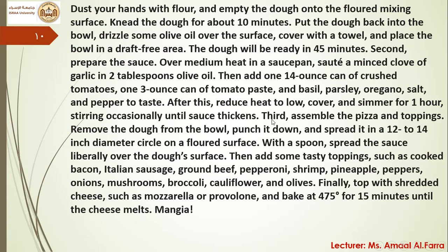Third, assemble the pizza and toppings. Remove the dough from the bowl, punch it down, and spread it in a 12–14-inch diameter circle on a floured surface. With a spoon, spread the sauce liberally over the dough's surface. Then add some tasty toppings such as cooked bacon, Italian sausage, ground beef, pepperoni, shrimp, pineapple, peppers, onions, mushrooms, broccoli, cauliflower, and olives. Finally, top with shredded cheese such as mozzarella or provolone, and bake at 475 degrees for 15 minutes until the cheese melts. Mangia — an Italian word, because this is an Italian dish: pizza.